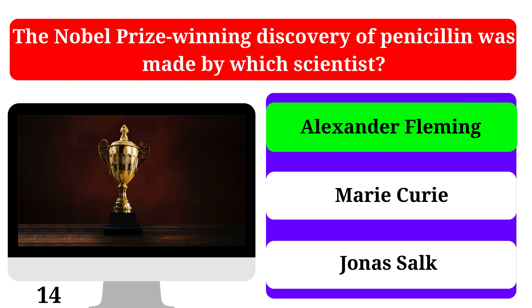Who developed the first programmable computer in the 1940s? Alan Turing, Konrad Zuse, or Charles Babbage. The correct answer is Konrad Zuse.